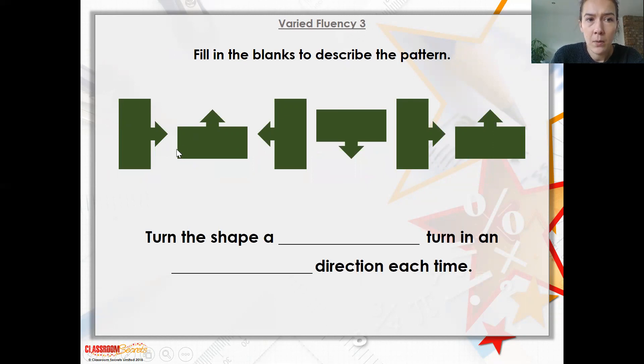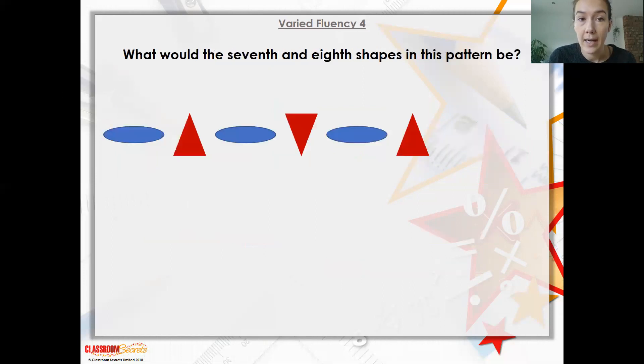So is the shape going in a clockwise direction? It could be, I suppose, but it depends if it's going three quarters of a turn. Let's have a look. So it is easy to say, turn the shape in a quarter turn in an anticlockwise direction each time. So if you think about that shape, it's going in an anticlockwise direction, a quarter each time.